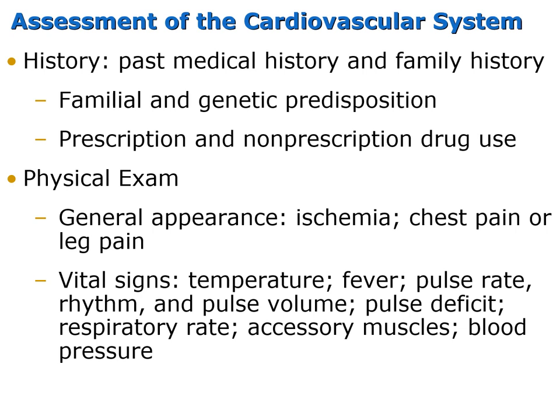For assessment of the cardiovascular patient, be sure to get a thorough history, past medical history, and family history. Determine if the patient has any previous cardiac issues and the familial and genetic predisposition. Ask about prescription, non-prescription, illicit drugs, or alcohol use. Perform a physical exam looking at the overall general appearance. Is the patient experiencing any ischemia, chest pain, or leg pain? Assess vital signs including fever, pulse rate and rhythm, respiratory rate, use of accessory muscles, and blood pressure.